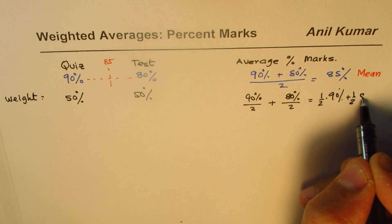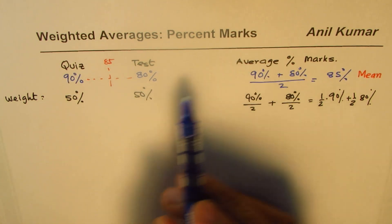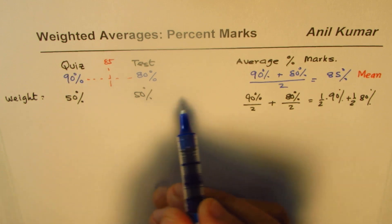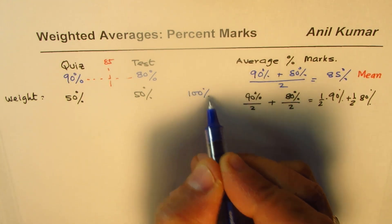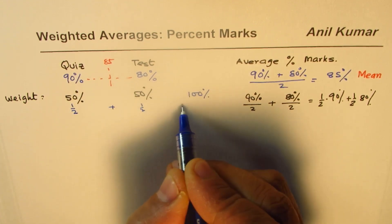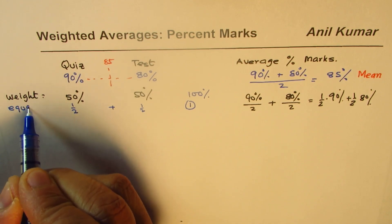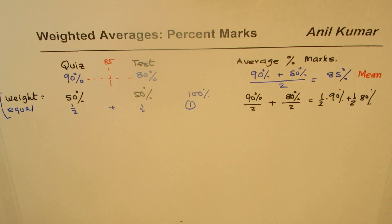So that is the case: both quiz and the test are equally important. To make a whole: 50 plus 50 is 100 percent, or half plus half gives us one whole. This is when the weights are equal — same importance. Now the question is, what happens if we change the importance, that is, if we have different weightages?